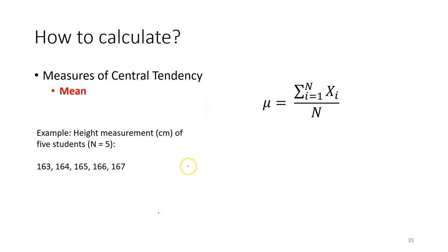To calculate the mean is quite straightforward. Let's say I have a dataset of five observations. This is body height: 163, 164, 165, 166, 167. In this course you have to learn how to do it manually step by step.